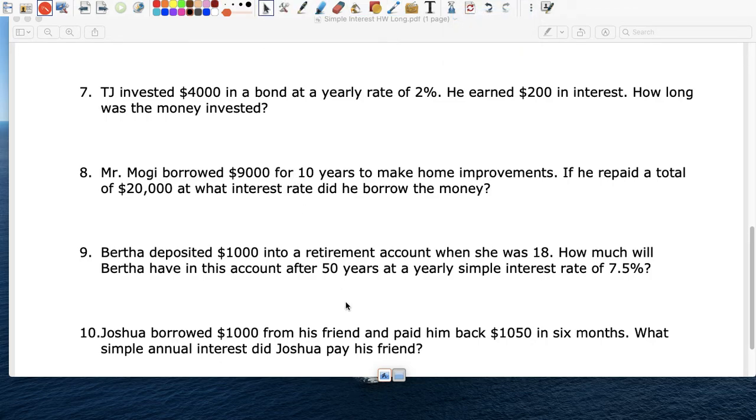Then last. Joshua. He borrowed $1,000. So that's my P. From his friend. And he paid back, he paid $1,050 in six months. Six months. The rate, what percentage did the friend charge? When he paid, he paid $1,050. When he paid the thousand, he paid a thousand plus fifty. He paid $1,000 plus the 50 that the friend charged. So that's your interest.